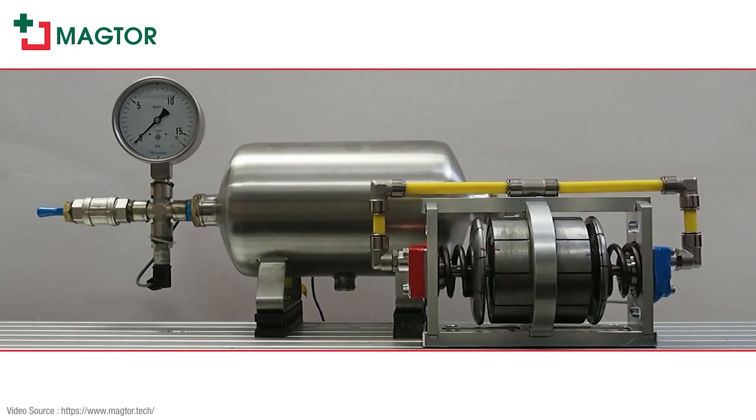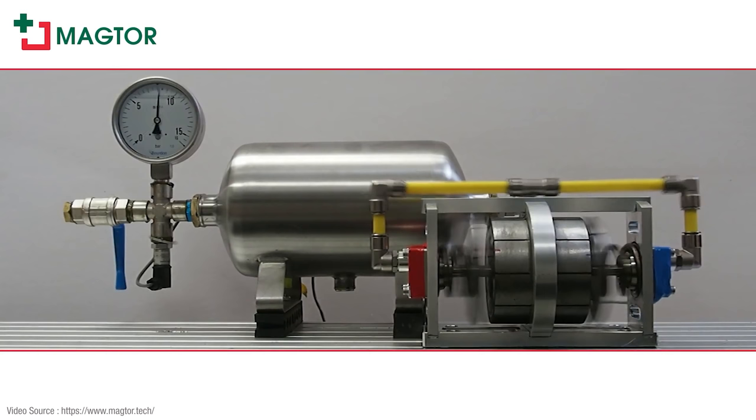In this working example, a Magtapressor is connected to a 5-liter tank of air. Magtor's tests have shown that their device, which is smaller and lighter than a traditional reciprocating piston air compressor, can pressurize a cylinder 38% faster while consuming 33% less electricity.